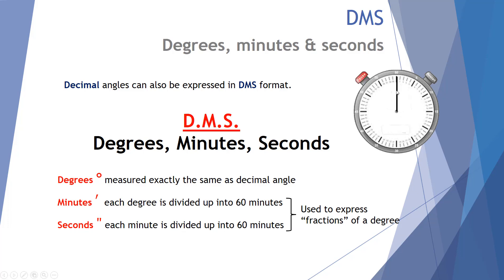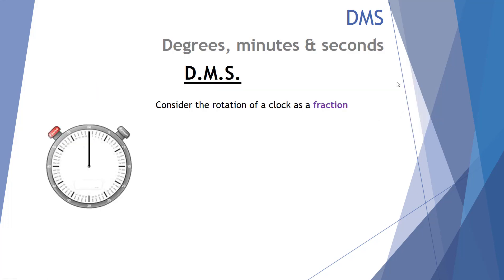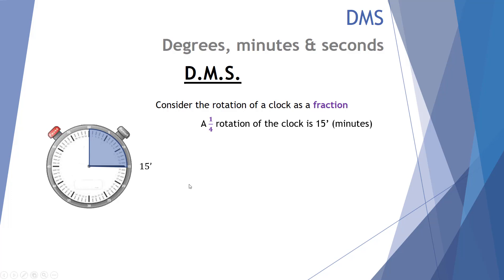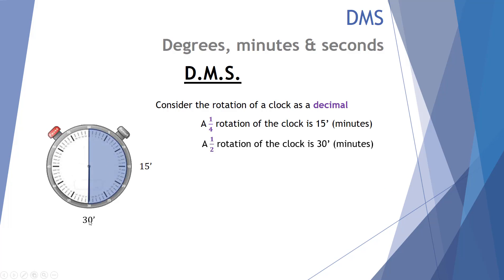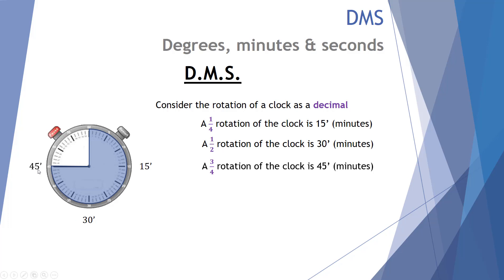The minutes and seconds are used to express fractions of a degree, going up to 60, much like a clock has 60 minutes in an hour or 60 seconds in a minute. Let's look at a clock and consider the rotation of a clock as a fraction. We can have a quarter of a rotation, represented as 15 minutes. A half rotation represents 30 minutes, or half past when thinking of hours. And three quarters of a rotation represents 45 minutes.